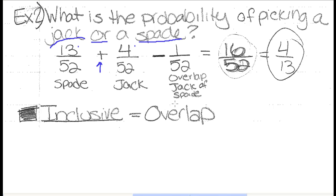which reduces to 4 over 13. So those two events are what we call inclusive. And when there's overlap, you have to subtract out how many elements overlap in each group. So in this case, there is one, because there's only one jack of spades in the deck.